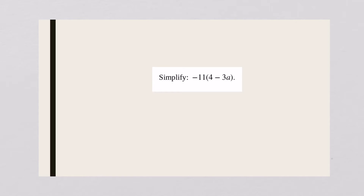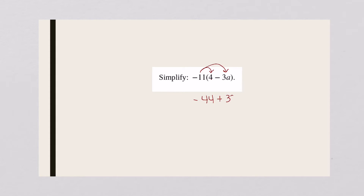For this one we're going to distribute a negative eleven: negative eleven times four, and negative eleven times a minus 3a. So negative eleven times four is negative forty-four. Negative eleven times a negative three is a positive, so I'm going to put a plus there — thirty-three a.